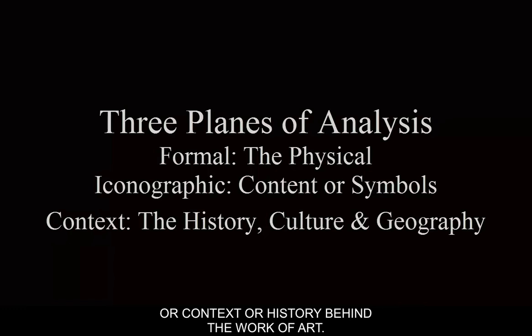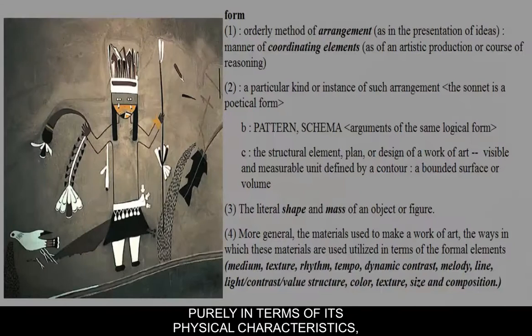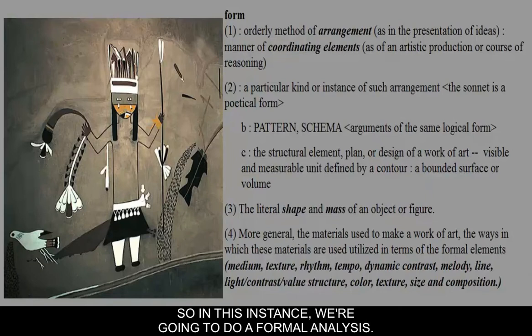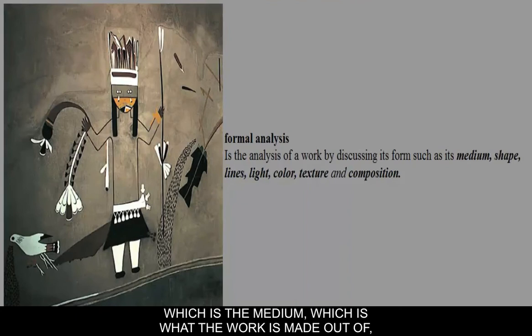For this work of art, we're going to divorce it from what it represents and the people that made it, and look at it purely in terms of its physical or formal characteristics. In a formal analysis, you need to know its basis: the medium — what the work is made out of — and the shapes that describe the forms in the work of art.